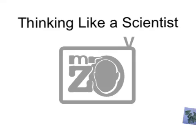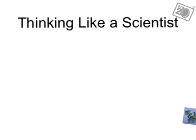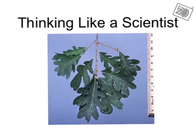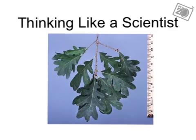Hey everyone, welcome to another edition of the Zcast. This is Mr. Z and today we're going to talk about thinking like a scientist. We're going to talk specifically about leaves, trees, identifying things, and a bunch of other related stuff. This is a type of leaf — it's an unknown — and we're going to try to classify it and figure out what it is, but first we have some steps to take along the way.